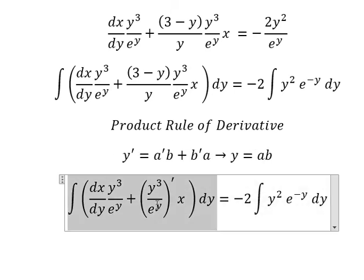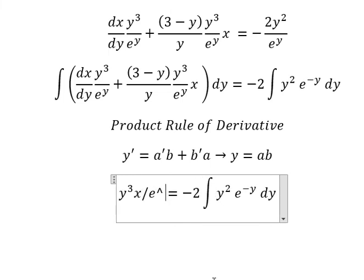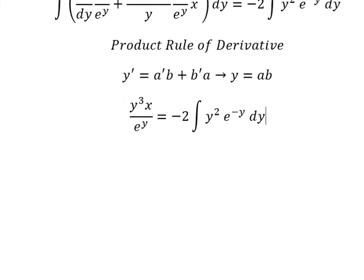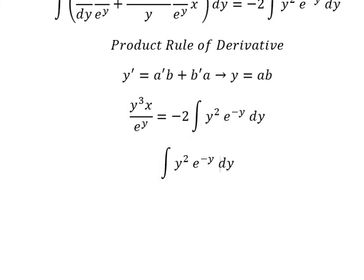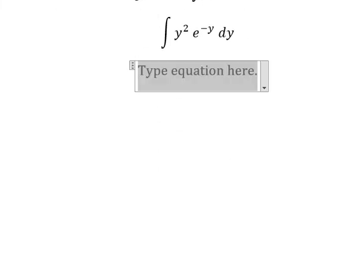So if we look carefully at this, we have the first derivative of a multiplied by b, and the first derivative of b multiplied by a. So the integration of this gives y equals a times b. The integration gives us y to the power of three over e to the power of y. Now we concentrate on this part and use integration by parts.